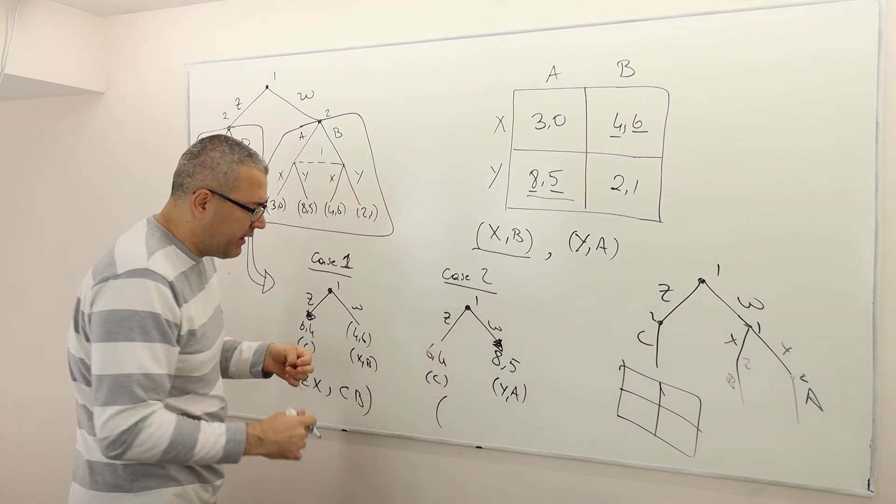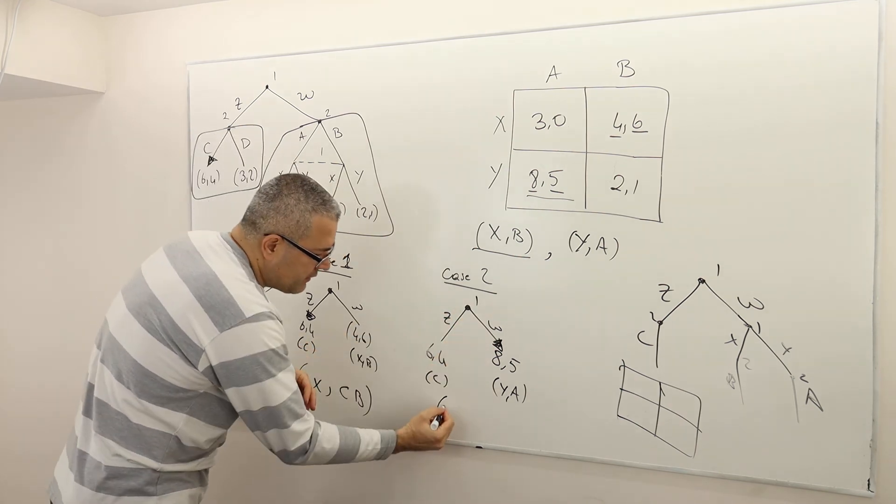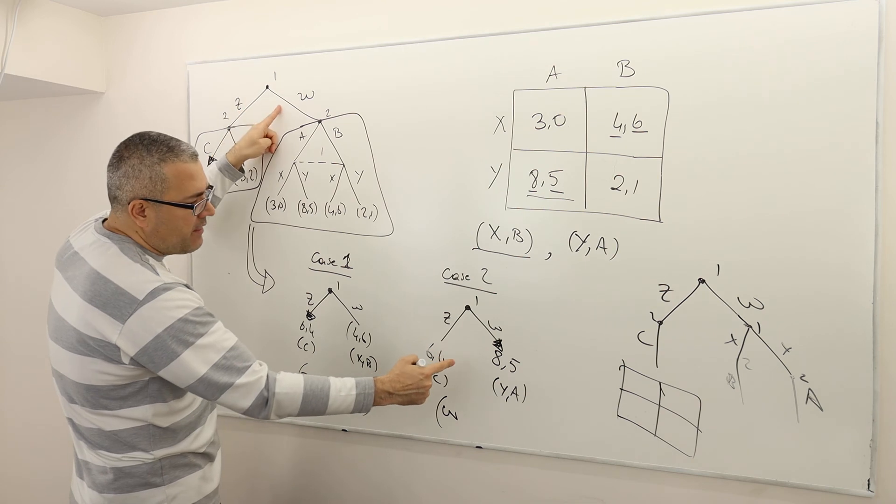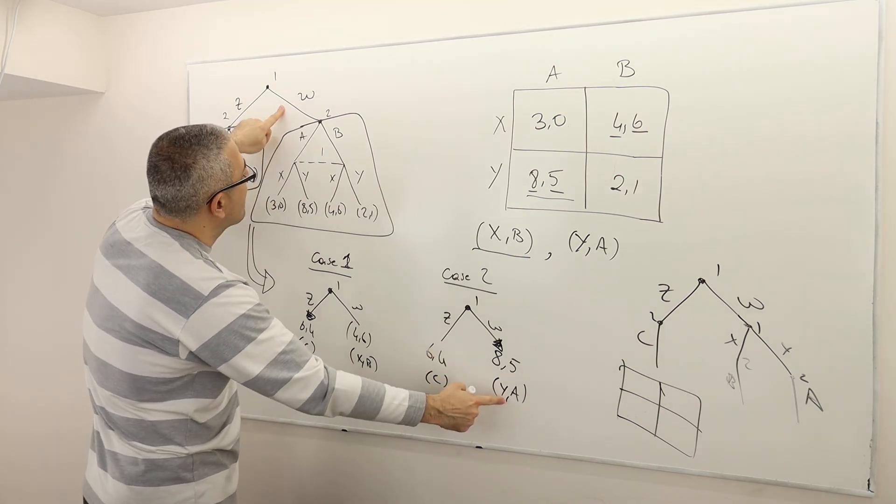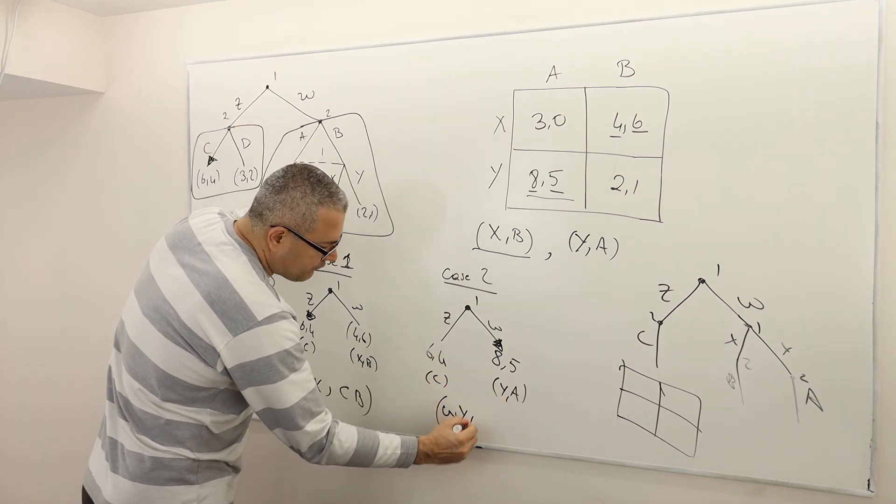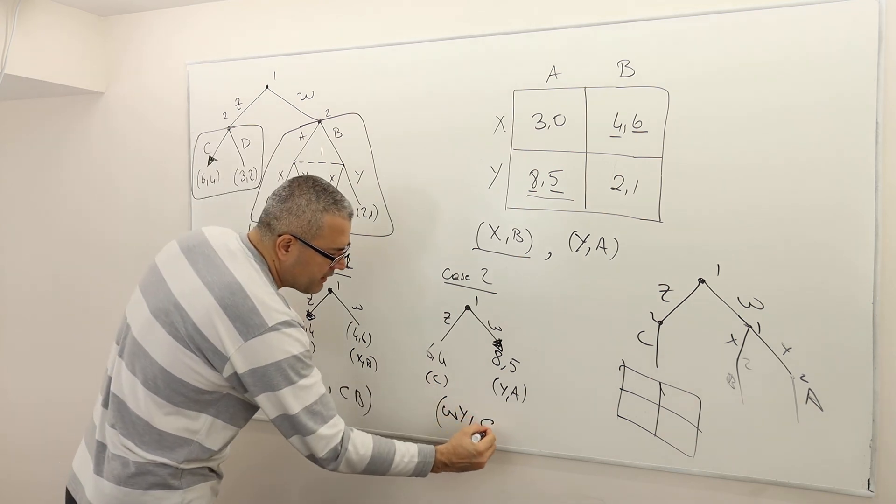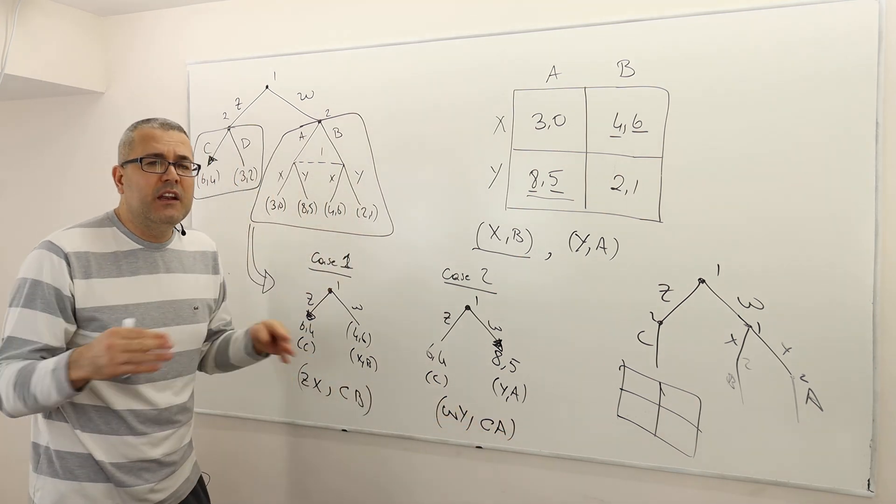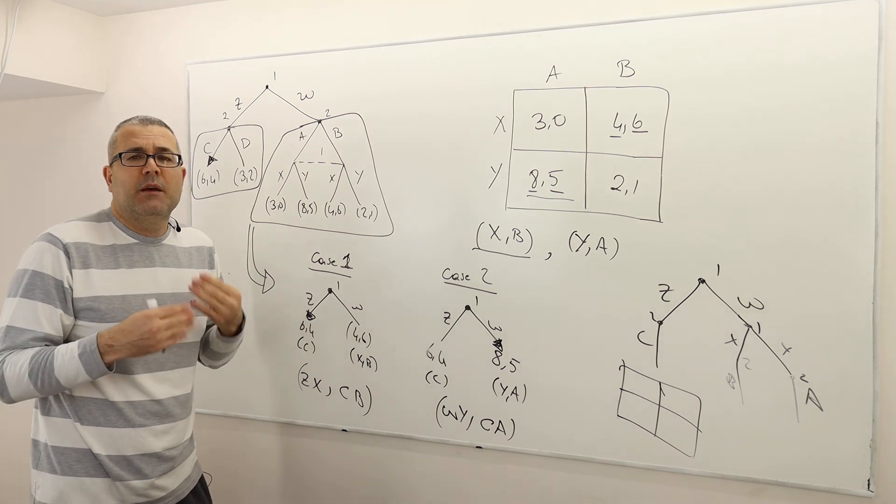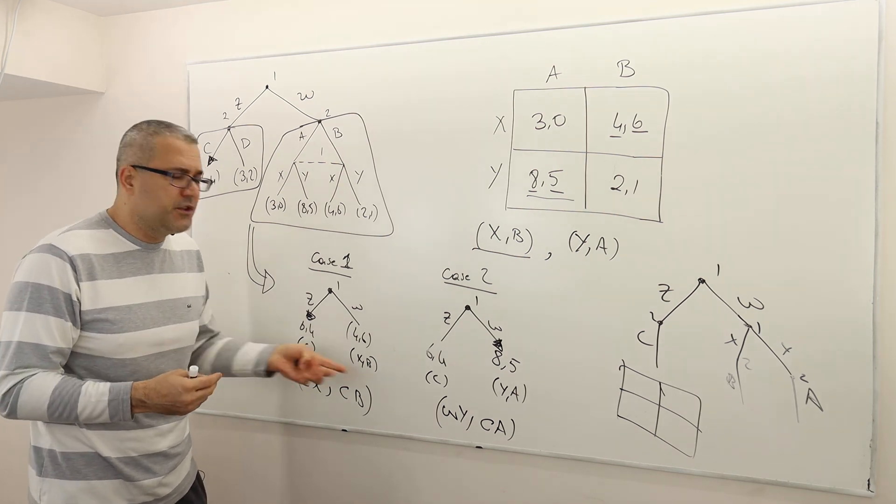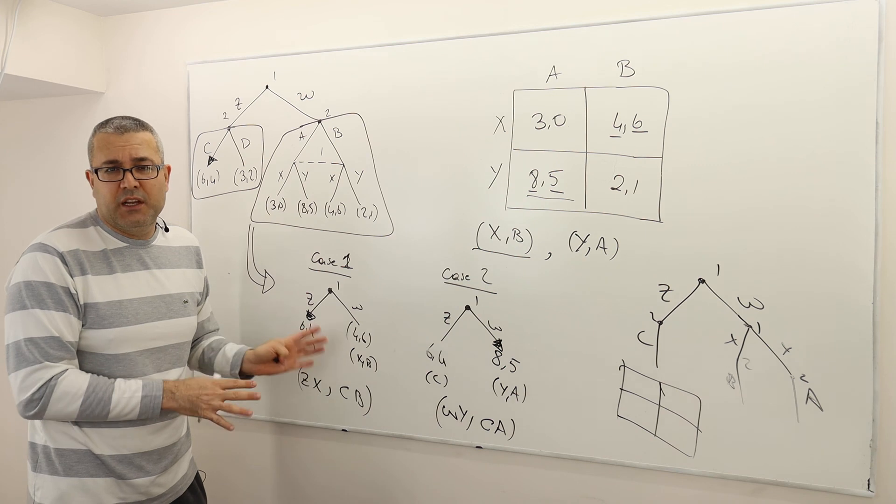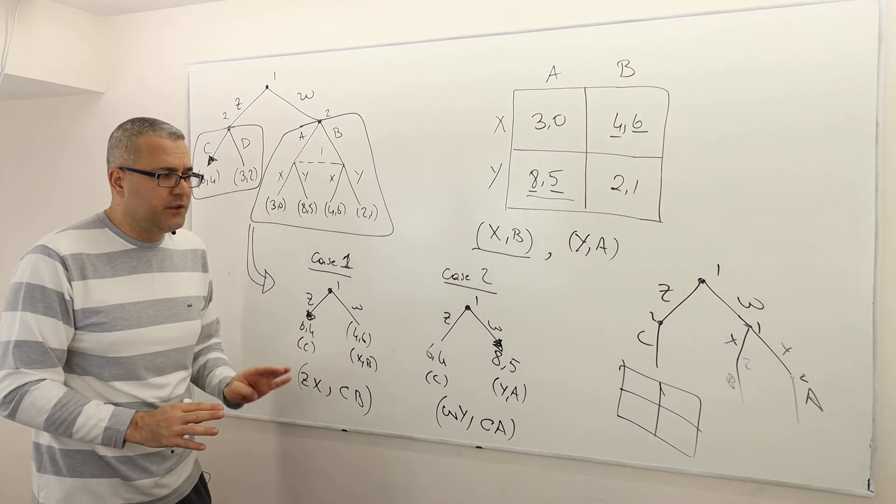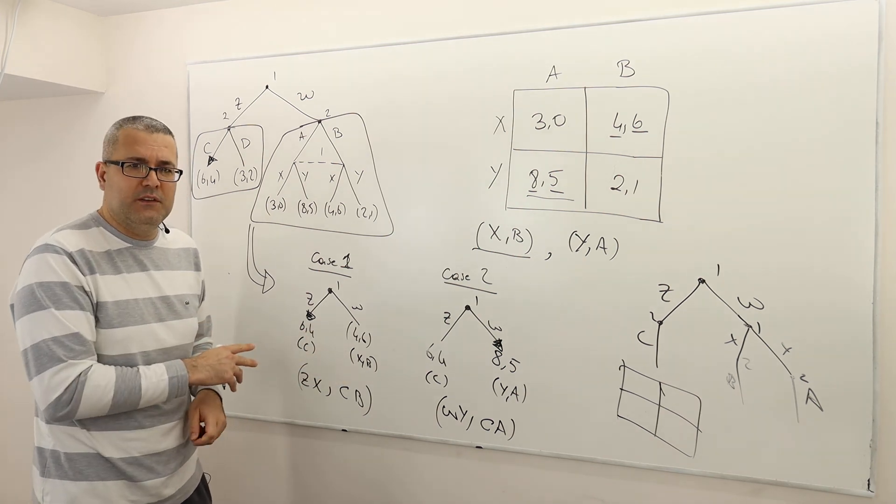Here, that brings me another SPNE. Player 1 plays W here. Alright? And then player 1 plays Y here. Comma. Player 2 plays C here and A here. So that's the other SPNE. And there is no other subgame perfect Nash equilibrium strategy profiles in pure strategies. Alright? So that's it. There are only two of them. And this is how we analyze this game.